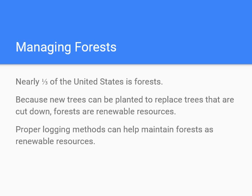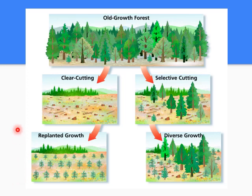Managing forests: nearly one-third of the United States is forest. Because new trees can be planted once they're chopped down, forests are renewable resources that grow in a reasonable amount of time — most trees can regrow in a human lifetime. Proper logging methods can help maintain forests as renewable resources. Clear cutting is where all trees are taken down, harvested for wood pulp or lumber, and then replanted — typically resulting in even-aged stands of the same species.